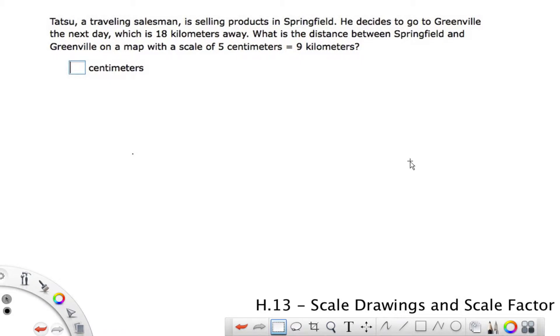We are now looking at scale drawings and scale factor, and this is IXL 8th grade, section H13. We've got Tatsu, a traveling salesman, selling products in Springfield, and he decides to go to Greenville the next day, which is 18 kilometers away. What is the distance between Springfield and Greenville on a map with a scale of 5 centimeters equal to 9 kilometers?